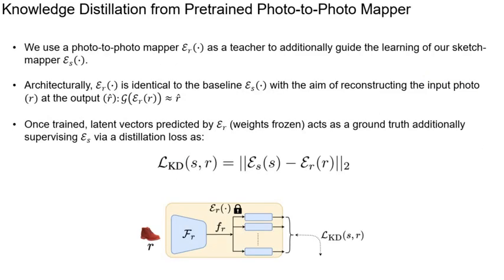Since photo-to-photo mapping is an easier task than sketch-to-photo, we use a photo-to-photo mapper (ER) as a teacher to additionally guide the learning of our sketch mapper. The architecture of ER is identical to our baseline sketch mapper, but with the aim of reconstructing the input photo at the output. Once trained, we freeze ER, and the latent vectors predicted by ER act as ground truth, additionally supervising our sketch mapper via a simple distillation loss.